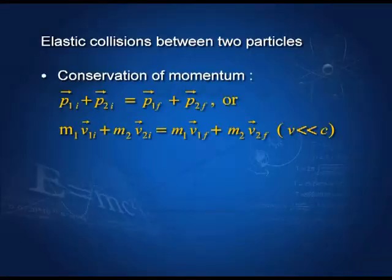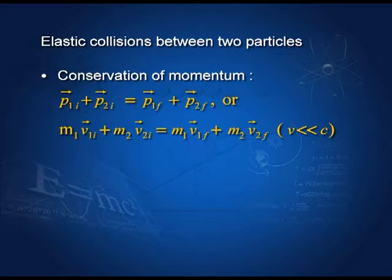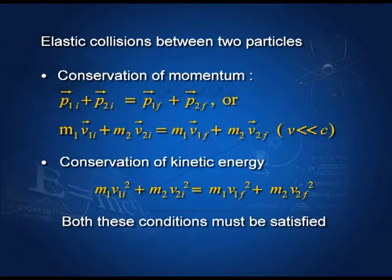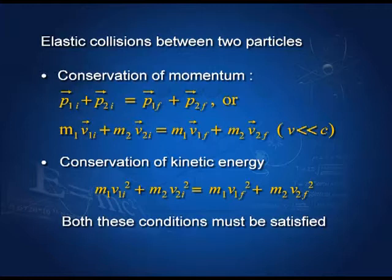Let us now do some mathematics for an elastic collision between two particles. Conservation of momentum: p₁ᵢ + p₂ᵢ = p₁f + p₂f, or m₁v₁ᵢ + m₂v₂ᵢ = m₁v₁f + m₂v₂f, assuming the velocities are much smaller than the speed of light. Conservation of kinetic energy: ½m₁v₁ᵢ² + ½m₂v₂ᵢ² = ½m₁v₁f² + ½m₂v₂f². Both conditions must be satisfied in an elastic collision.